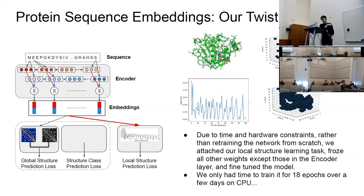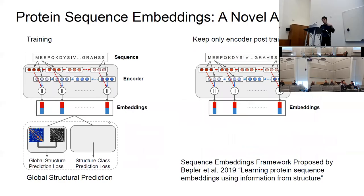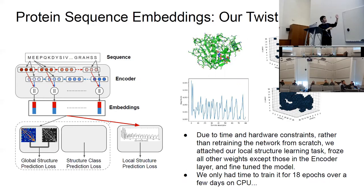Due to time and compute constraints, we originally wanted to train the whole model, but we didn't have time and the whole model didn't fit in the GPU. Training on a CPU would take around 80 days. So what we did instead is take the previous model's weights, attach our local structural prediction network at the end, load the weights, freeze everything, and fine-tune the embeddings on our task. But since we only had CPUs, we only fine-tuned for 18 epochs.